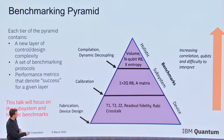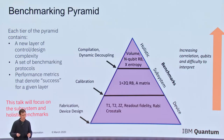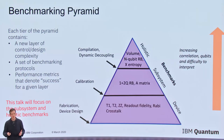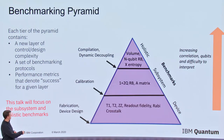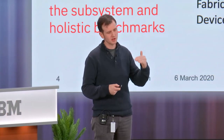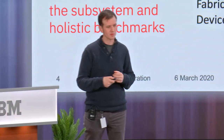Moving up from our device specification, we enter what we call subsystem benchmarking, and this includes things like randomized benchmarking. And then finally we go to holistic benchmarks, which only give us a few numbers characterizing the device, but they characterize the holistic performance — the algorithmic power of the device. Each layer in this pyramid represents a kind of stopping point where we have to hit specific success metrics to continue further up the pyramid.